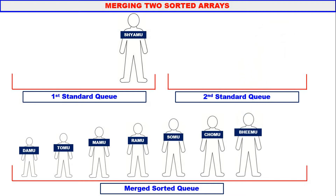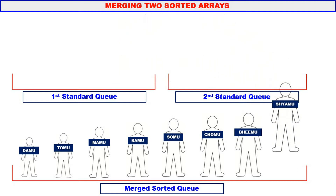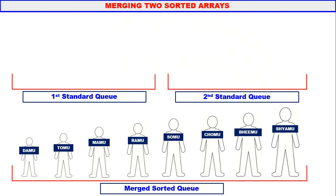We cannot do comparisons because the second standard queue is empty. Therefore, the remaining students of first standard are simply added to the end. Only one student remains — add them to the end of the queue. That's all the concept of merging two sorted arrays. If you have understood this concept, almost 90% of merge sort you have understood.